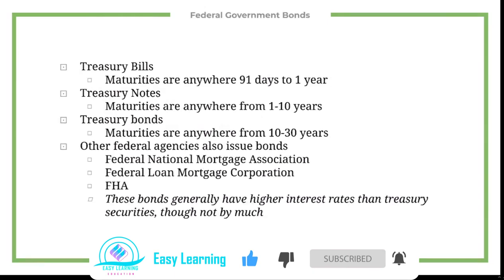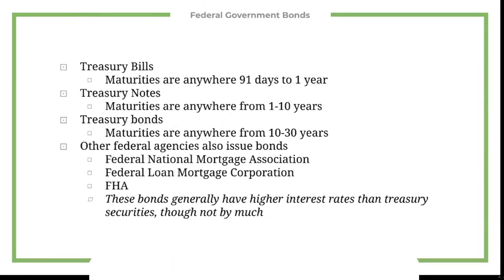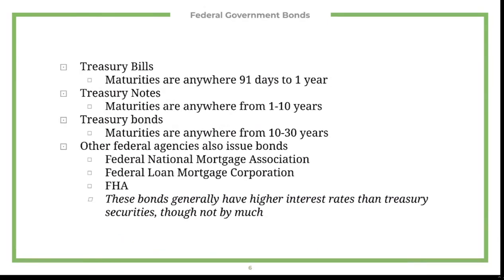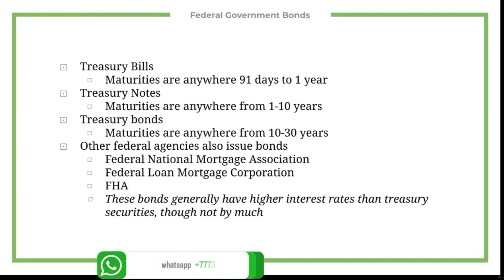The next kind is called federal government bonds, and these consist of treasury bills, treasury notes, and any other kind of federal agency issued bond. Treasury bills have a maturation of anywhere between 91 days to a full year.